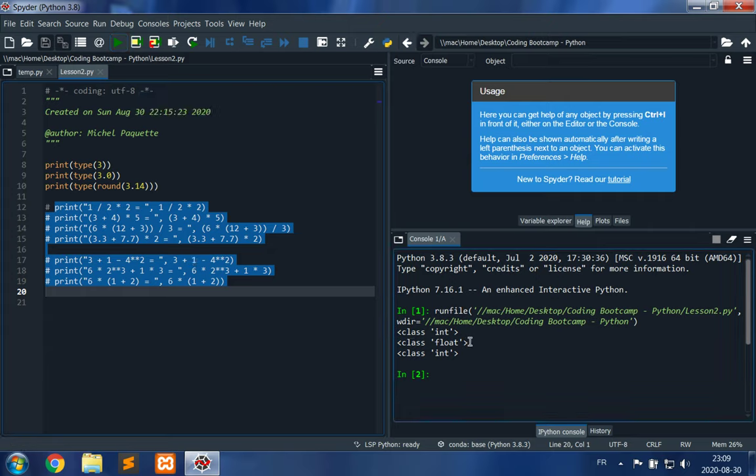The output states that for line 8 we have class int, then class float for line 9, and class int again for line 10. This means the type of 3 is integer, the type of 3.0 is float, and the type of round of 3.14 is also integer.